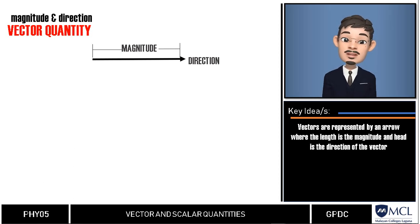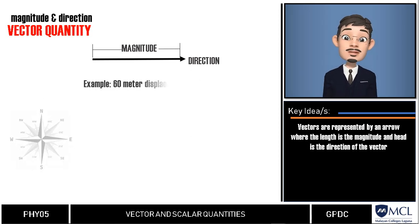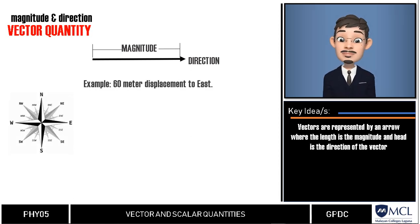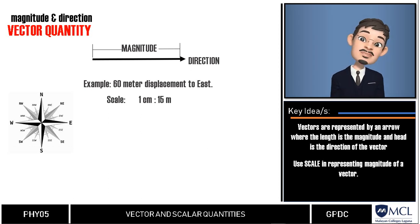We cannot just randomly draw an arrow though. The length of the arrow must be drawn using scales to indicate the magnitude of the vector quantity. What does it mean? If we want to represent my 60-meter displacement from point A to point B, then we will use an appropriate scale, say 1 centimeter is to 15 meter. Then, that is when we can draw the magnitude of the arrow.